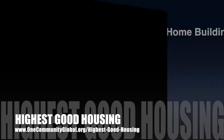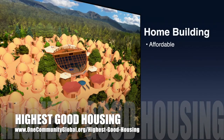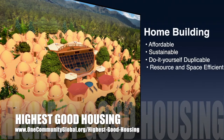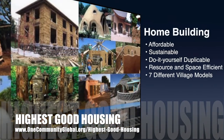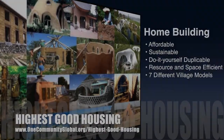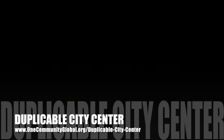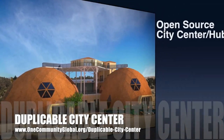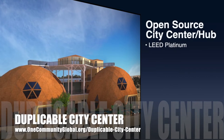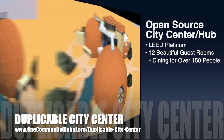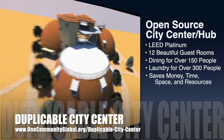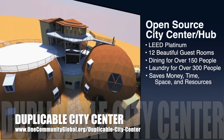The One Community approach to highest good housing is eco-artistic home building that is affordable, sustainable, do-it-yourself duplicable, resource and space efficient, and consists of seven different sustainably constructed village models. One Community is also creating an open-source duplicable city center designed to be LEED Platinum certified, provide 12 guest rooms, dining for over 150 people, and laundry and recreation space for over 300 people, all while saving money, time, space, and resources.